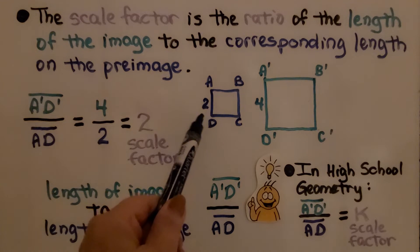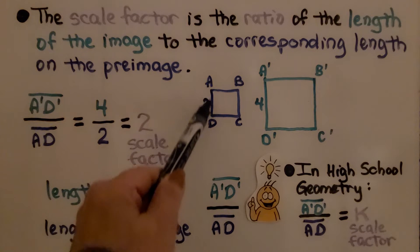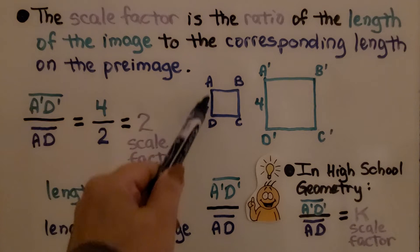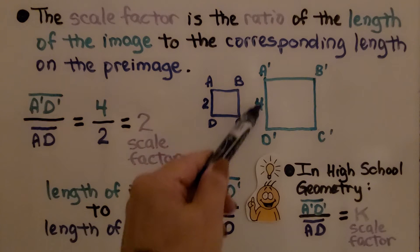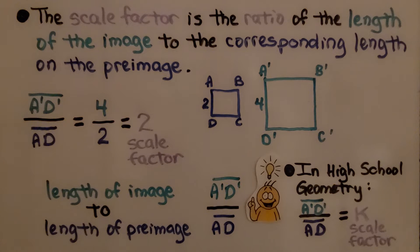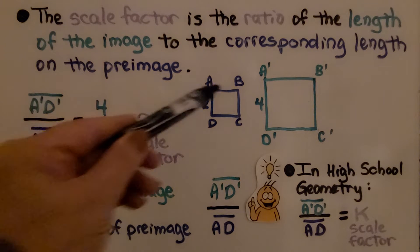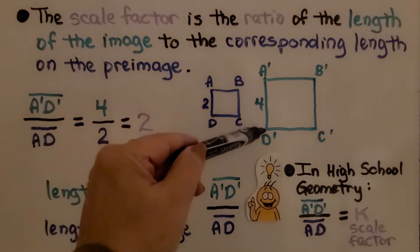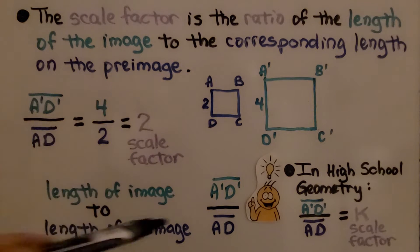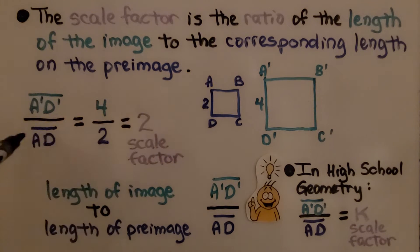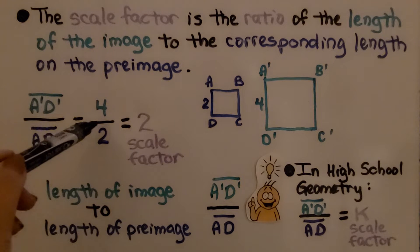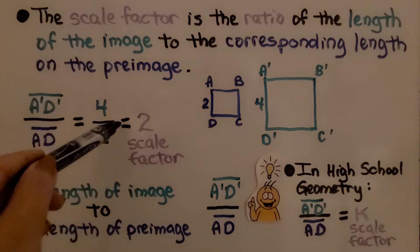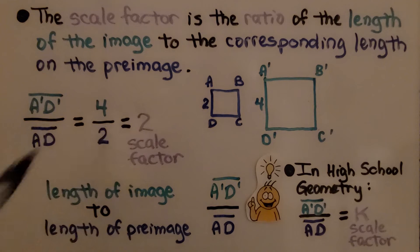Here we have our preimage square, and we can see this length is 2. We have our image, and we can see the corresponding length is 4. Segment A'D' is 4, and segment AD is 2. We do 4 over 2 — 4 divided by 2 is 2. We know our scale factor is 2.